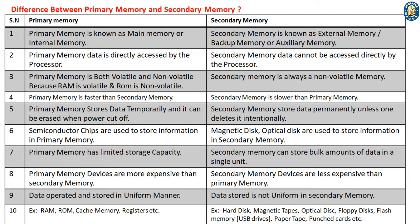2. Primary memory data is directly accessed by the processor. Secondary memory data cannot be accessed directly by the processor. 3. Primary memory is both volatile and non-volatile because RAM is volatile and ROM is non-volatile. Secondary memory is always a non-volatile memory.